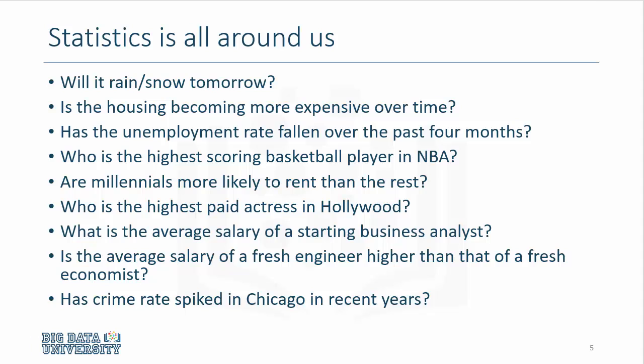All we have to do is think of the conversations we have on a regular basis. Our days start with concern about rain or snow. We turn to the Weather Channel to see whether it will rain or snow today or tomorrow. When the Weather Channel informs you that the chance of rain is 35% or 60%, you are essentially relying on statistical tools and technologies to come up with those forecasts so that you may be better prepared for either rain or snow.